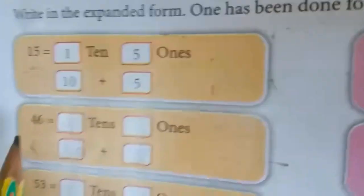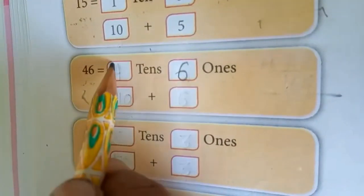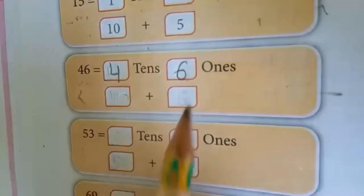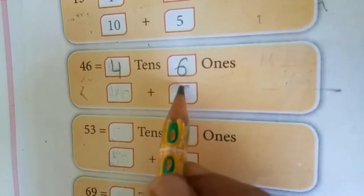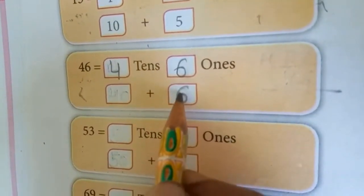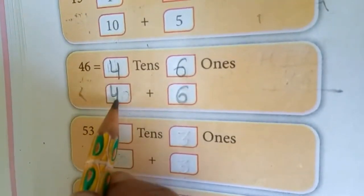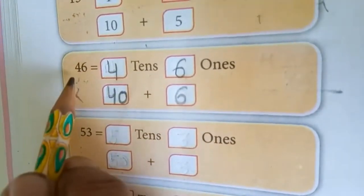46: 6 ones, 4 tens. That gives us 6 ones and 40, making 46.